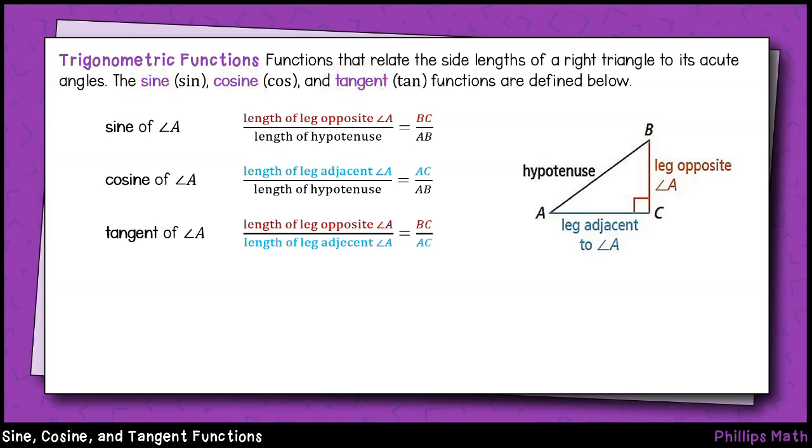Here are their specific definitions using this right triangle to the right as a reference. The sine of angle A is the ratio between the leg opposite of angle A and the hypotenuse, which is across from the right angle. In this particular right triangle, that'll be the measurement of BC divided by AB.